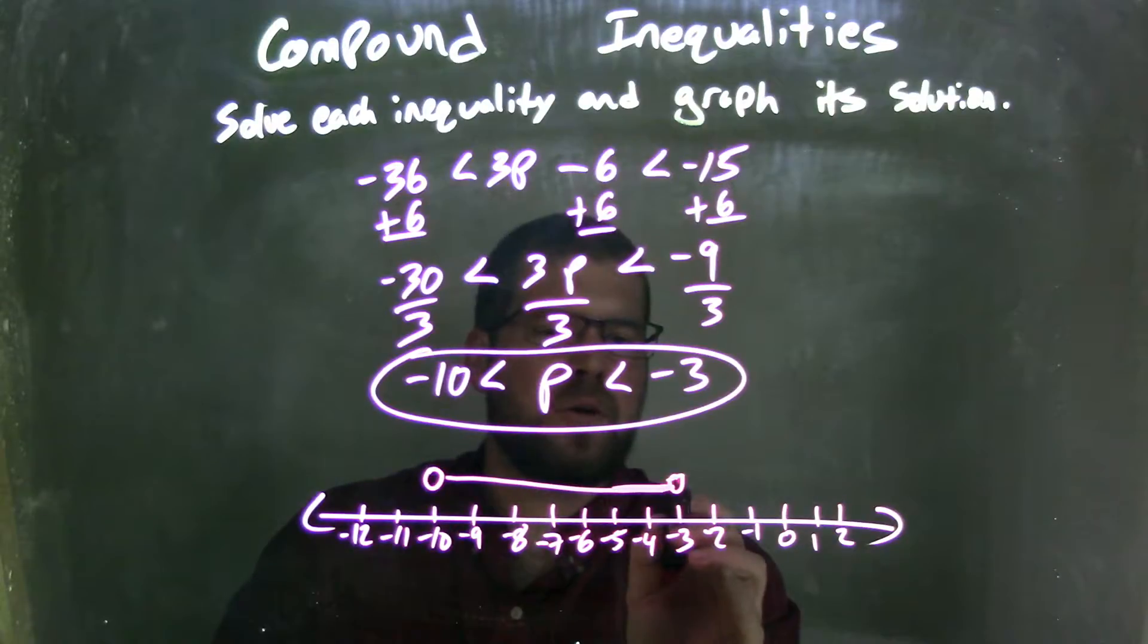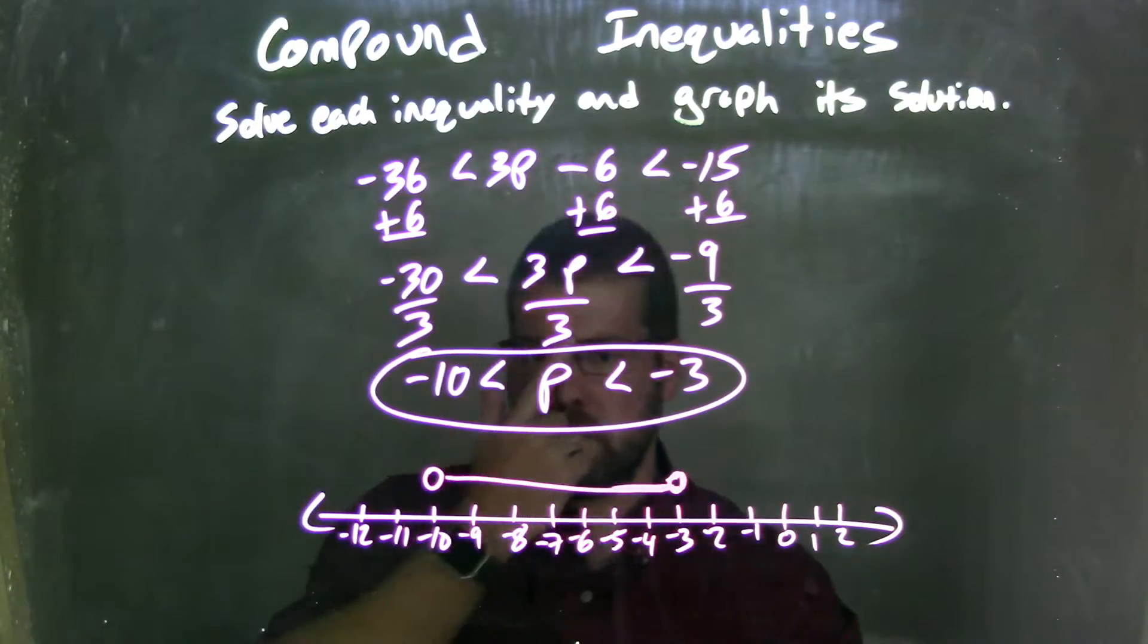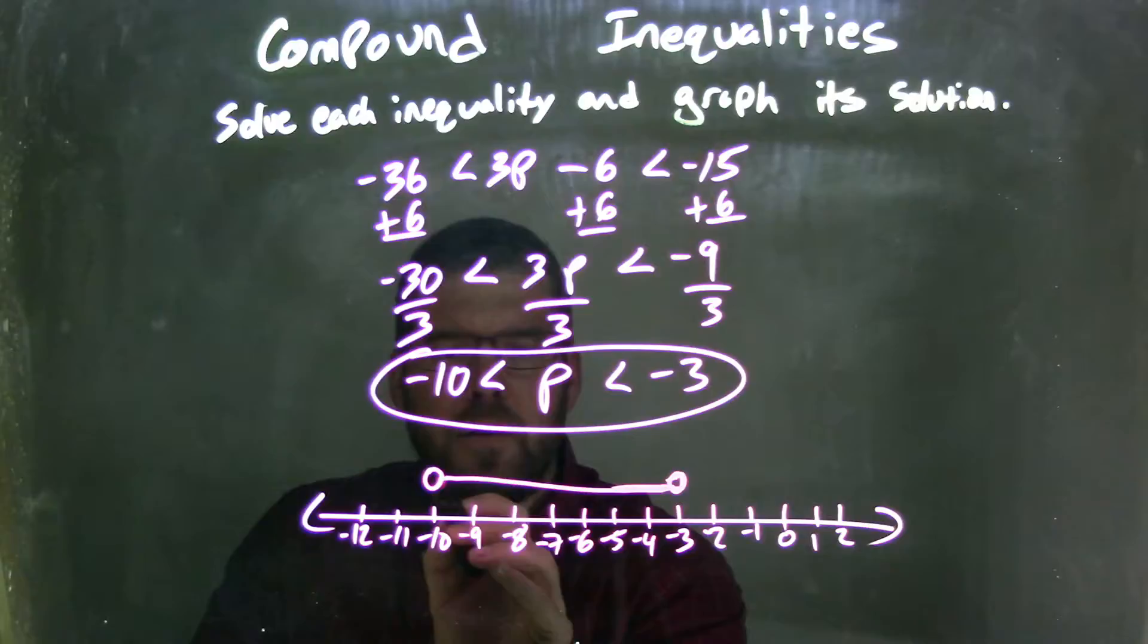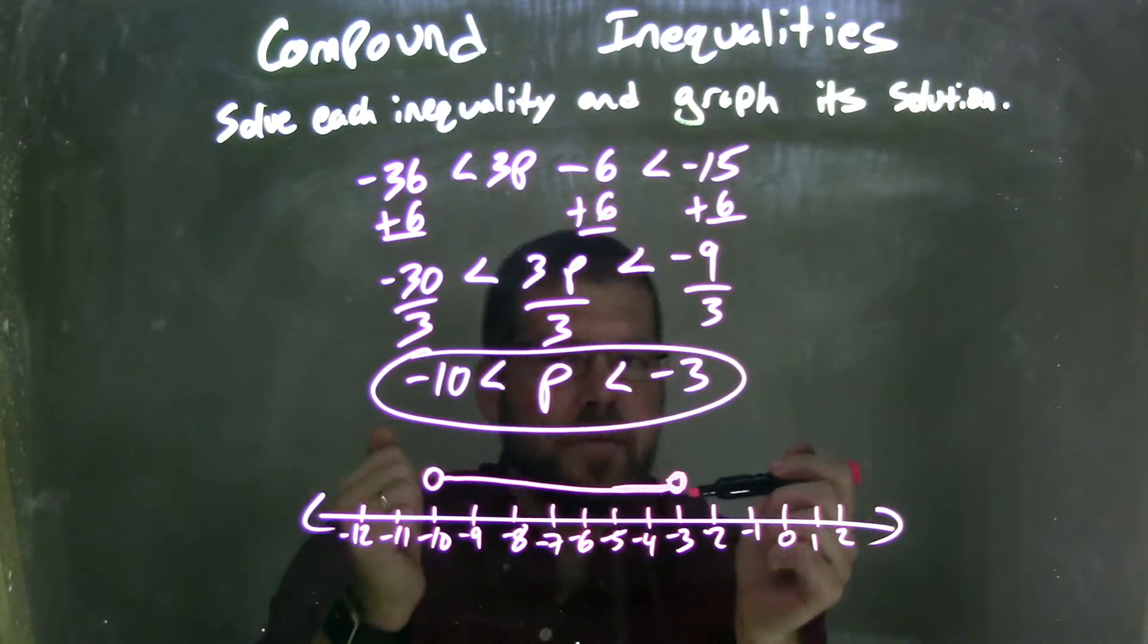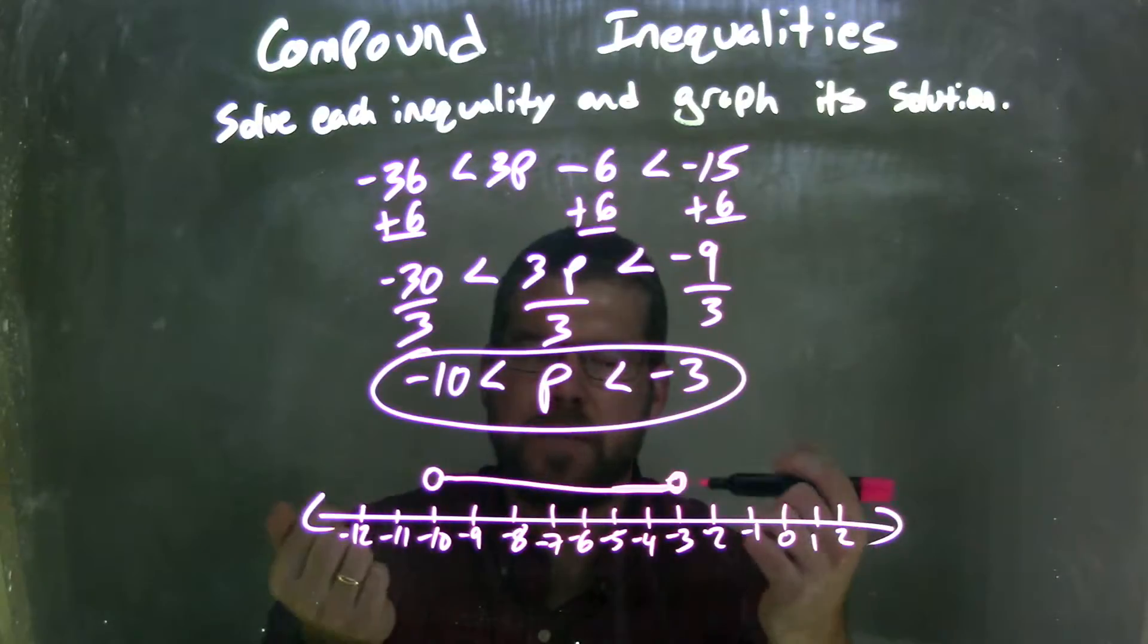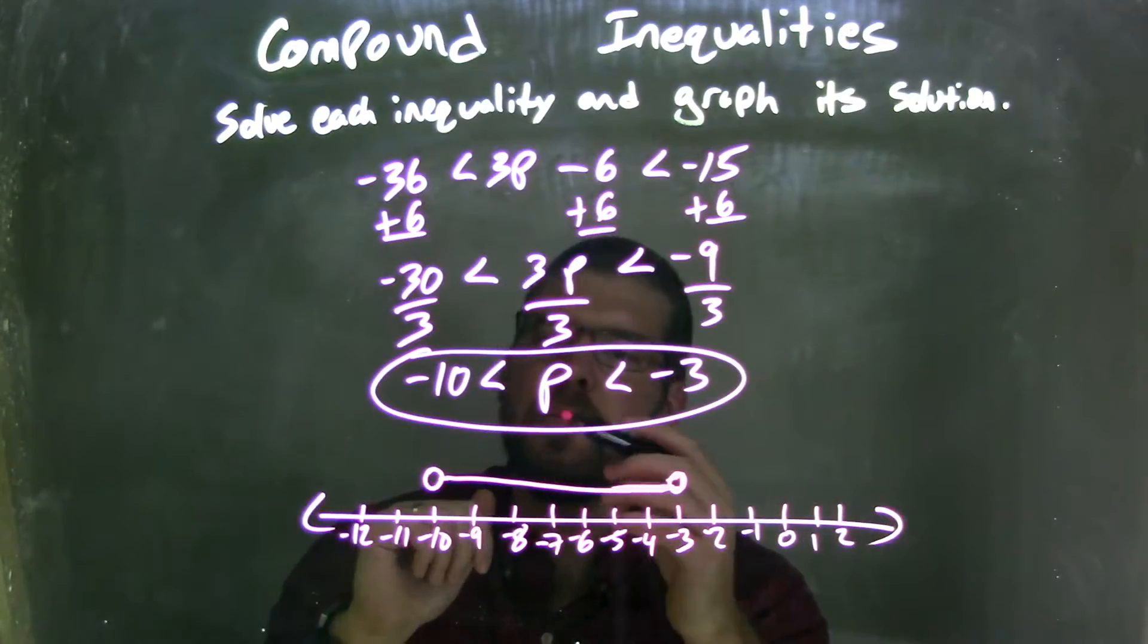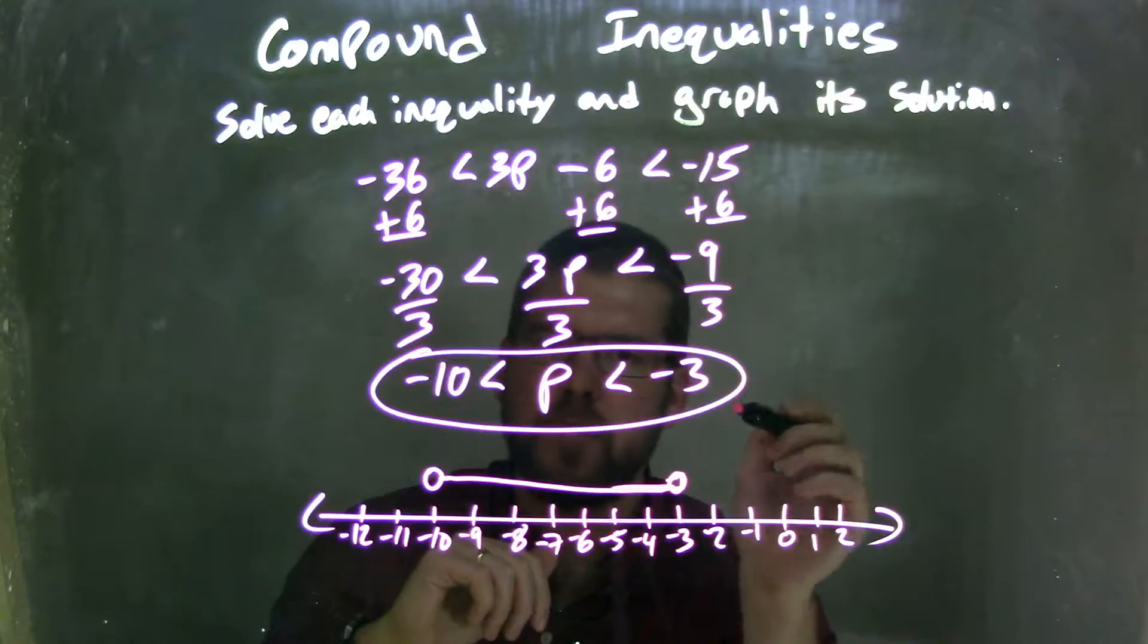So I'm going to put my line here in between them. If I can paint a straight line, it's a little harder than it looks, folks. So we have our graph here from negative 10 to negative 3, not including those values, but p can exist anywhere in between. And that graph matches our final answer, which is negative 10 is less than p, which is less than negative 3.